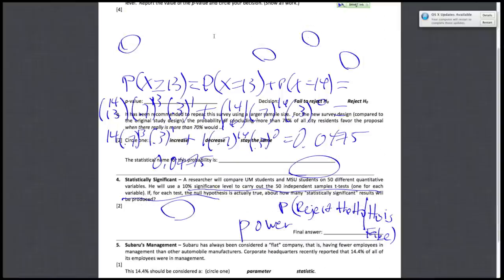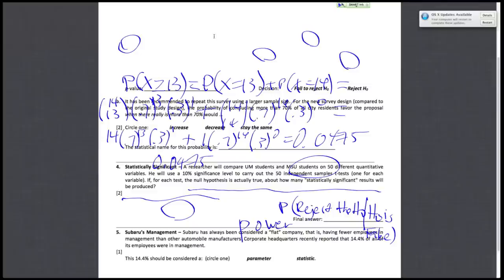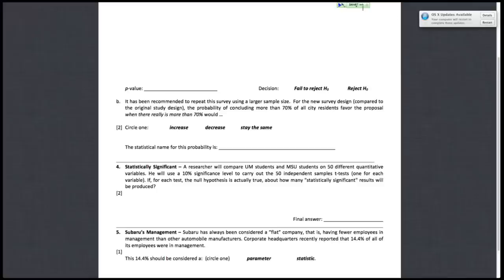Alright, moving on to the next question, question 4. Let's get this ink out of the way. Question 4 states that a researcher will compare UM students and MSU students on 50 different quantitative variables. He will use a 10% significance level to carry out the 50 independent sample t-tests, one for each variable. If for each test the null hypothesis is actually true, about how many statistically significant results will be produced.